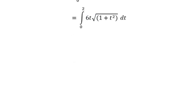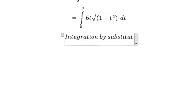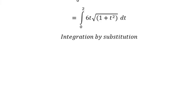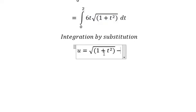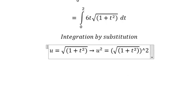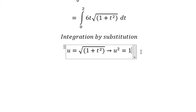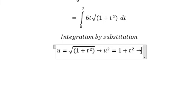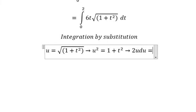Next, we need to use integration by substitution. So I will put u equal to this expression. And then we put both sides to the power of 2 to cancel the square root. Next, we need to do the first derivative for both sides. The first derivative of u squared gives us 2u, and this one gives us 2t.